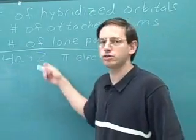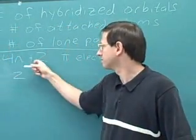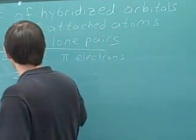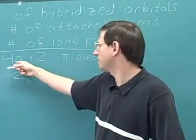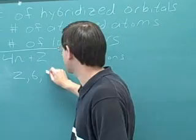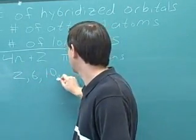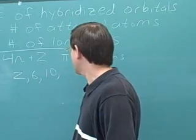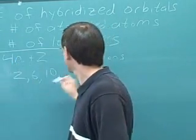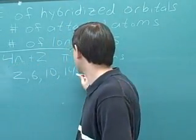For example, if n equals 0, you'd have 2 pi electrons. If n equals 1, you could have 6 pi electrons — 4 plus 2 is 6. If n equals 2, you'd have 10 pi electrons — 4 times 2 is 8, plus 2 is 10. If n equals 3, you'd have 14 pi electrons — 4 times 3 is 12, plus 2 is 14.